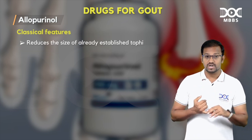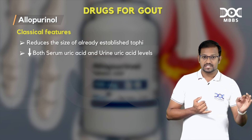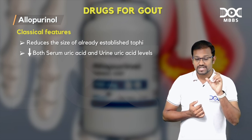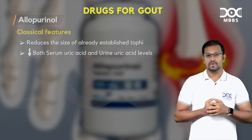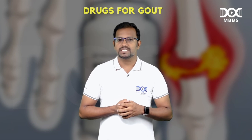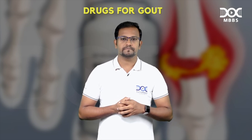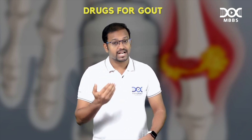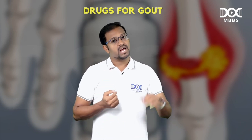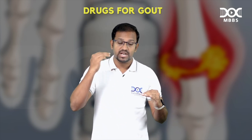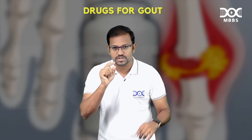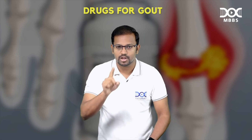The classical features of allopurinol: it tends to reduce the size of already established tophi, and it decreases both serum uric acid levels and urinary uric acid levels. This is an important distinction — the patient in the case scenario was on an anti-gout medication that decreased serum uric acid but increased urinary uric acid levels. Since allopurinol decreases both serum and urinary uric acid levels, we can clearly strike off allopurinol from those options.